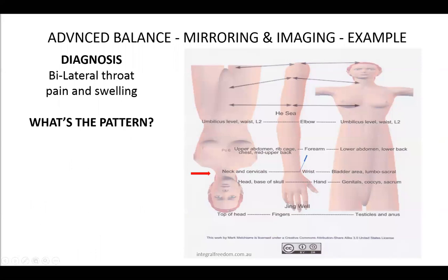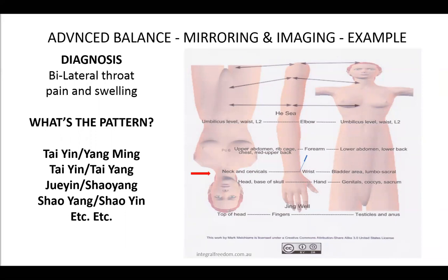Now when you apply Advanced Balance Method acupuncture, we need to add another component: what's the pattern? If you've done Advanced Balance Method training, we're already used to thinking in patterns — Tai Yin Yang Ming, Tai Yin Tai Yang, Jue Yin Shao Yang, etc. We know how to identify those patterns and then apply them to specific symptom presentations.